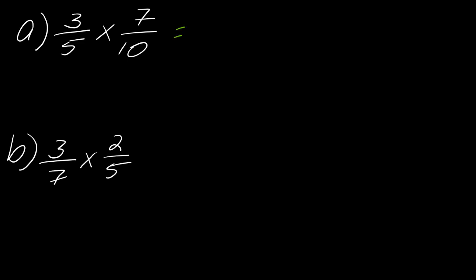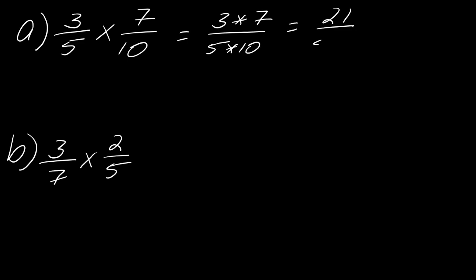Like I just said, I'm going to take 3 times 7 and 5 times 10, and this is going to give me 21 over 50. So what about something like 3 sevenths times 2 fifths? I'll give you a second to do the calculation if you want to pause here. So 3 times 2 is 6, 7 times 5 is 35 — so 6 over 35 would be the answer.